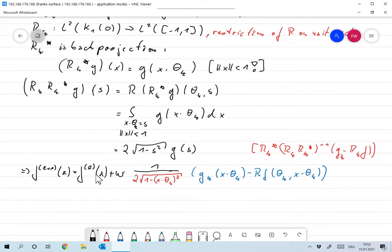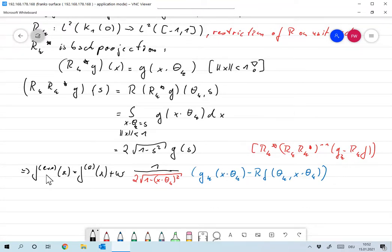Okay, so now let's finally write down what the Kaczmarz algorithm boils down to in this case. Fl plus one of x is Fl of x plus omega times, and now I'm plugging in this term. Rk adjoined is just the evaluation at the point x times theta k. Now Rk Rk adjoined to the minus one is just multiplying with one over two times square root of one minus x times theta k squared. And finally, we need to insert x times theta k into the right hand side. So that's Gk of x times theta k minus Rf of theta k and x times theta k. So this is something that can immediately be implemented.